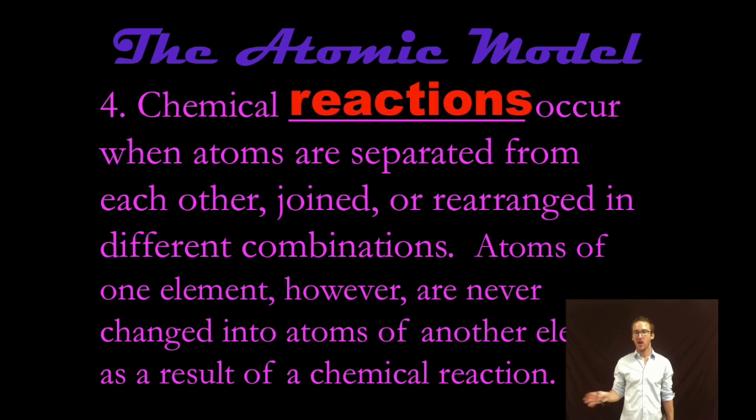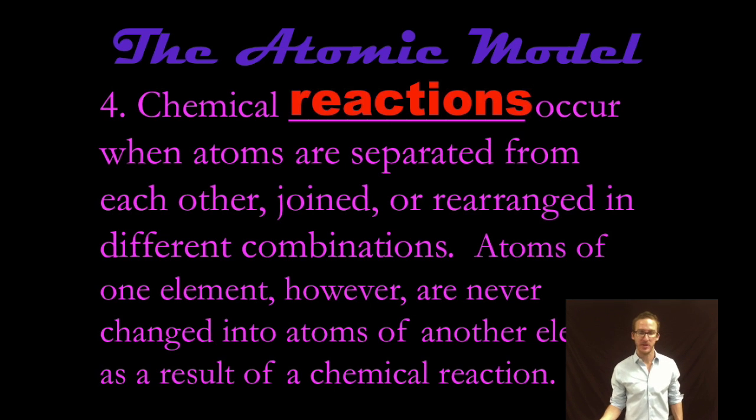Postulate number four. Dalton also proposed that chemical reactions occur when atoms are separated from each other, joined, or rearranged in different combinations. And atoms of one element are never changed to atoms of another element as the result of a chemical reaction. Breaking bonds, forming bonds, but we aren't changing one atom into an atom of another element. Dalton's model of the atom: Small, indivisible particles. Atoms.